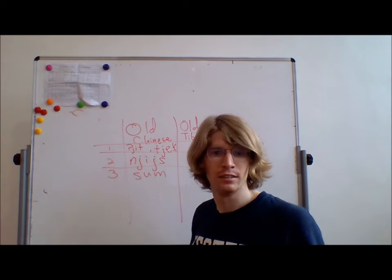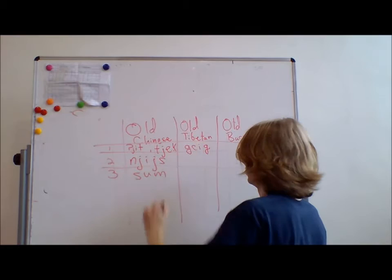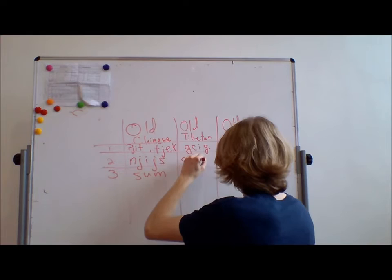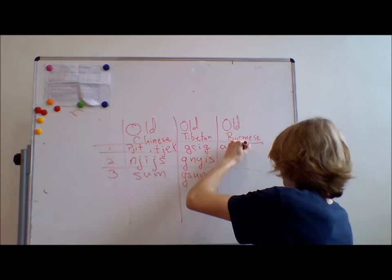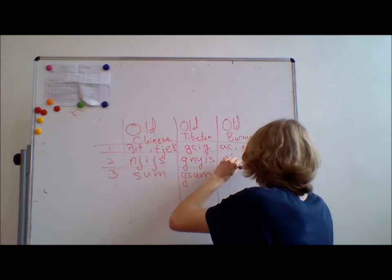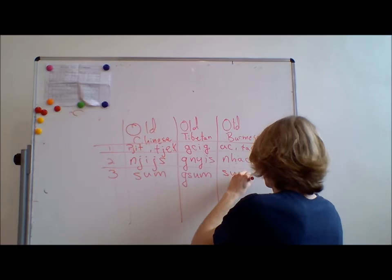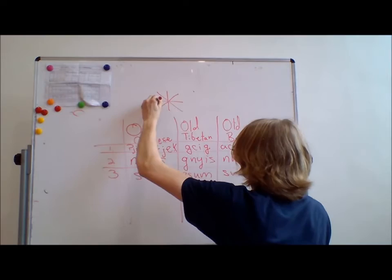And in Tibetan, gik, gnis, sum. Old Burmese, ak, rak, and sum. And we're going to put a big asterisk above this whole thing, because these are all reconstructions, they're not actually words that were written down phonetically.